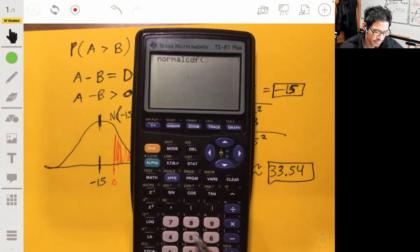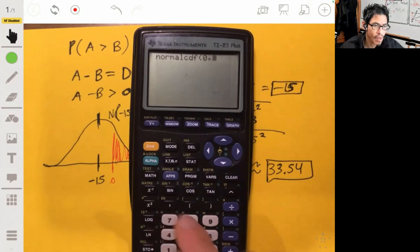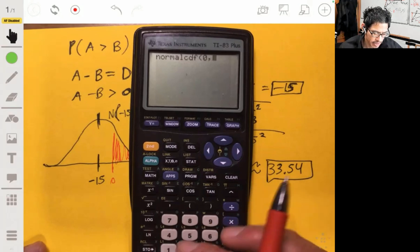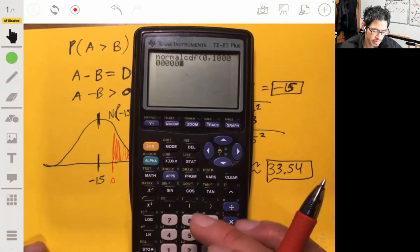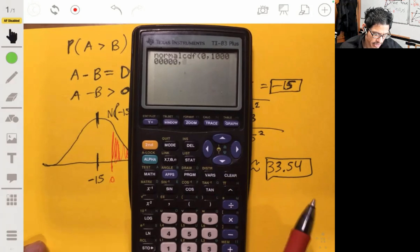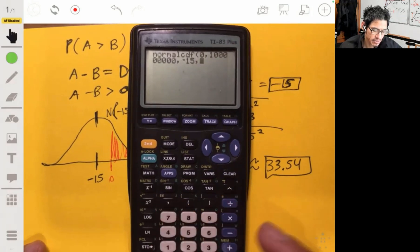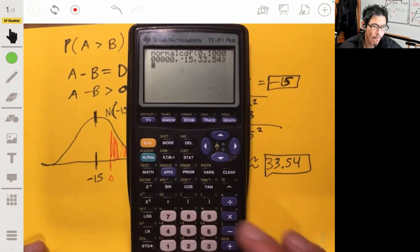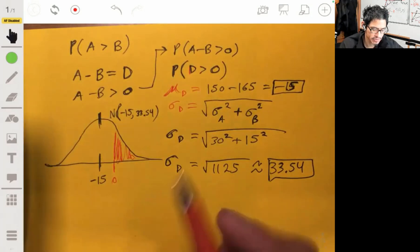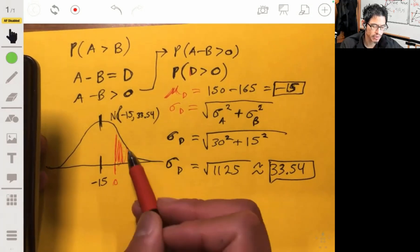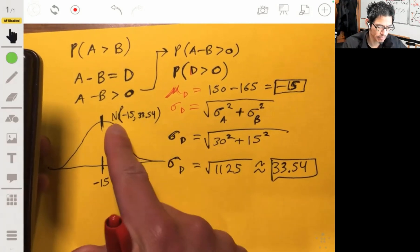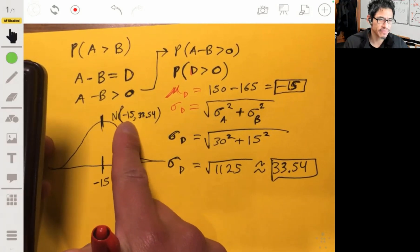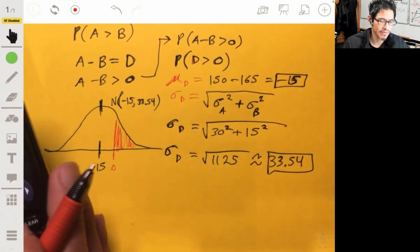We enter the lower bound first, the left bound first, which is going to be 0, followed by a comma, then the upper bound, a very big number, comma, then the mean, negative 15, comma, standard deviation. And now it will tell us the area to the right of zero in a normal distribution with mean negative 15, and standard deviation 33.54. If you have a newer calculator, it'll probably be much easier and user-friendly to use.